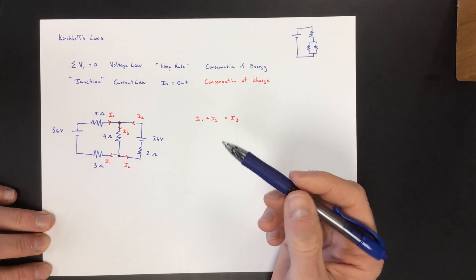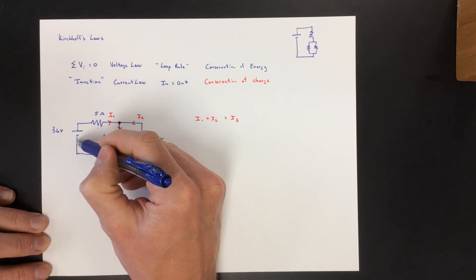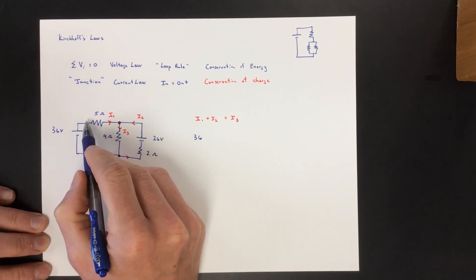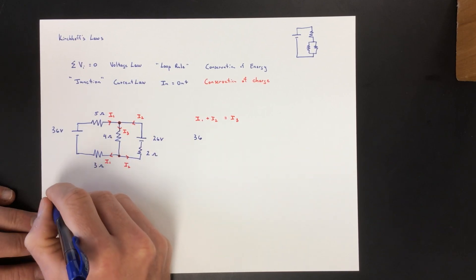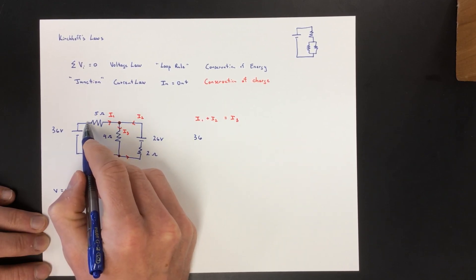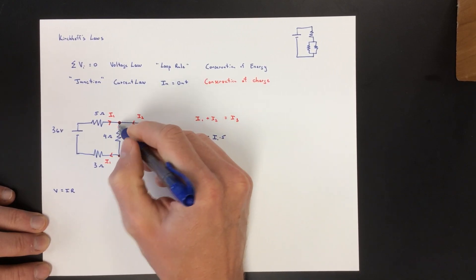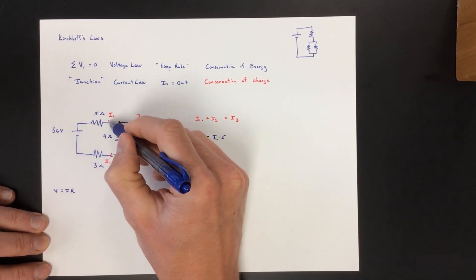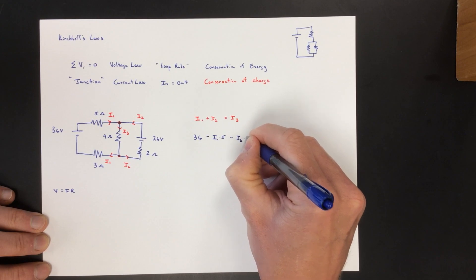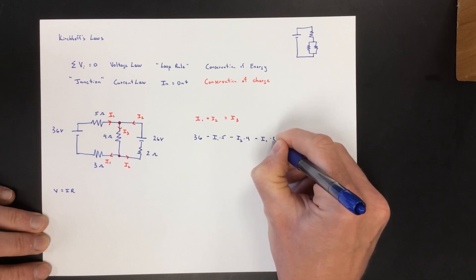Now we can do the loop rule. I'm going to start below the battery. If I do this, I'm going to gain 36 volts, and then I'm going to lose, how many volts am I going to lose going this way across the resistor? Well, V equals IR. So if I know the current and I know the resistance, I know the voltage drop. So this is just I1 times 5. I'm going to do the medium loop. I'm going to lose that, and then I'm going to lose another voltage over here. I'm going to lose I3 times 4, and I'm going to lose another I1 times 3, and I know that's equal to 0.